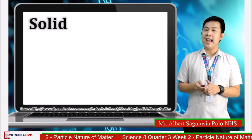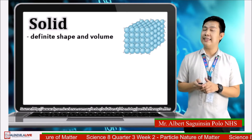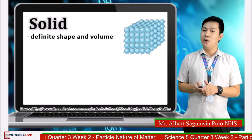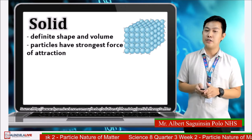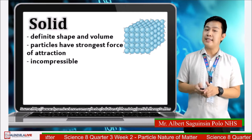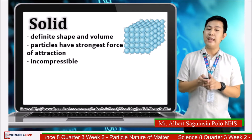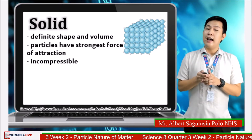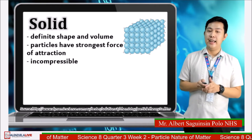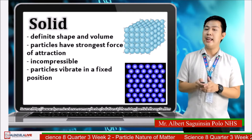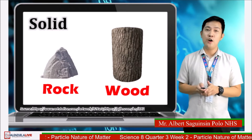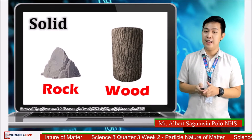Solid has a definite shape and volume because its particles are tightly packed and close to each other. As you can see on the particle model of solid, the particles are close to each other because they have the strongest force of attraction. Having tightly packed particles, the spaces between particles of solid are too small, making solid incompressible. The particles of solid only vibrate in a fixed position, containing less energy. Examples of solids are rock and wood.